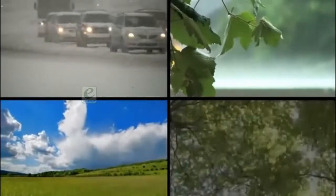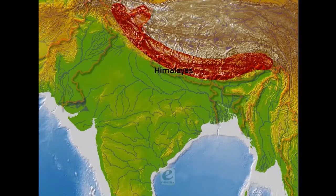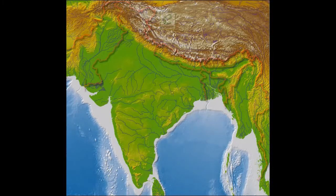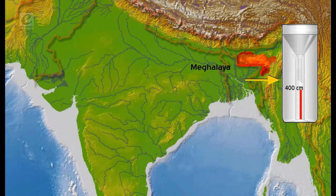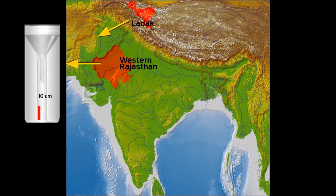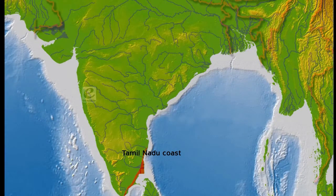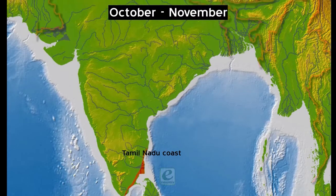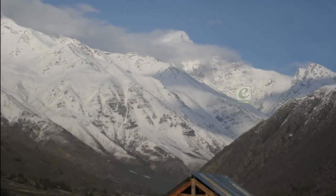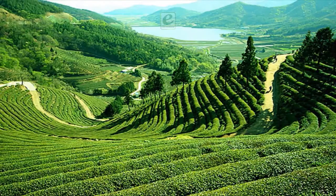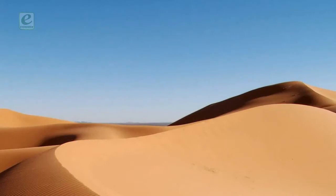While precipitation is mostly in the form of snowfall in the upper parts of the Himalayas, it rains over the rest of the country. The annual precipitation varies from over 400 centimetres in Meghalaya to less than 10 centimetres in Ladakh and western Rajasthan. Most parts of the country receive rainfall from June to September, except parts of the Tamil Nadu coast, which get most of its rainfall during October and November. Therefore, India is home to a variety of climatic regions.